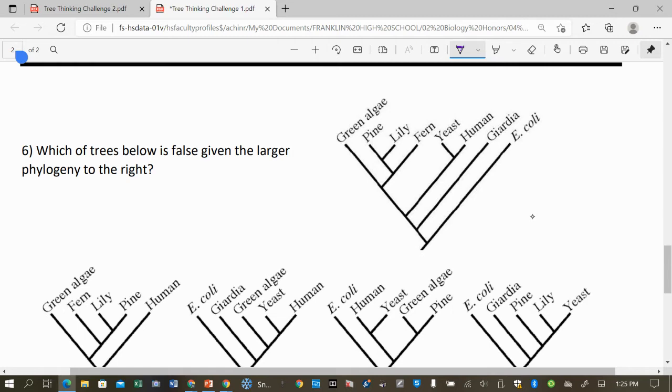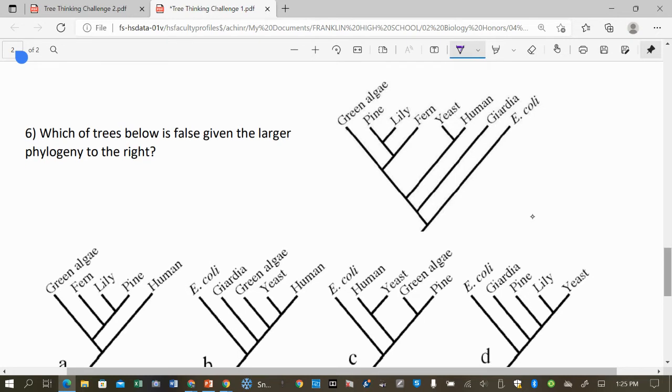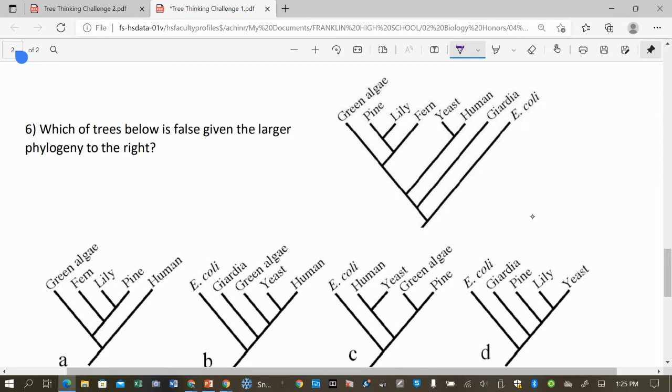Which of the trees below is false given the larger phylogeny to the right? So what this is trying to say is that there's more organisms on this one than on the others, but that's okay. You can still have a partial family tree as long as it's correct. So A is showing that the lily and the pine are the most closely related. Let's see. Yep, lily and pine are the most closely related. And then from there, lily pine and fern is next. So lily pine, yep, fern is next. Here's the common ancestor there. And then you're going backwards to the green algae here. Going back in time, green algae is most closely related next, and that's true here too. Very good. And then human, off in the distance. Excellent. So this one is true. This is just fine for a common ancestor and we're looking for faults.